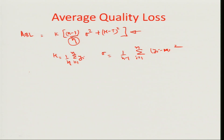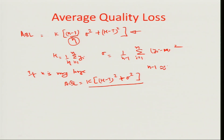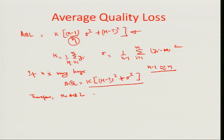The first thing that comes to mind is that if n is very large — that is, we are talking about a large sample size — the average quality loss AQL would then be just defined by k times (mu minus t) squared plus k times sigma squared. We can assume that n minus 1 is approximately equal to n if n is quite large, so in that situation the AQL will be made up of two components.